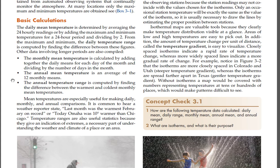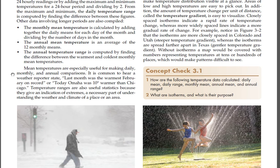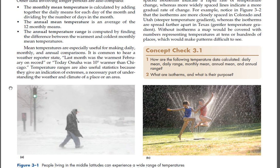The annual temperature range is computed by finding the difference between the warmest and coldest monthly mean temperatures. Mean temperatures are especially useful for making daily, monthly, and annual comparisons. It is common to hear a weather reporter state: 'last month was the warmest February on record' or 'today Omaha was 10 degrees warmer than Chicago.' Temperature ranges are also useful statistics because they give an indication of extremes, a necessary part of understanding the weather and climate of a place or area.